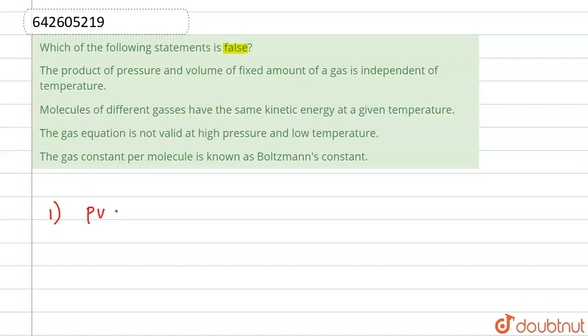Let us write our equation for ideal gas: PV equals nRT. From this equation, we can see that PV is directly proportional to T. It says it is independent of temperature, so this statement is false.